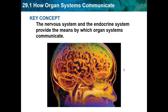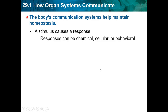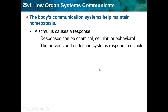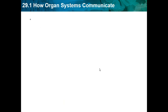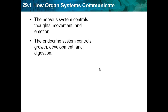The nervous system and the endocrine system provide the means by which organ systems communicate. The body's communication systems help maintain homeostasis. A stimulus causes a response, and responses can be chemical, cellular, or behavioral. The nervous system controls thoughts, movements, and emotions. The endocrine system controls growth, development, and digestion.